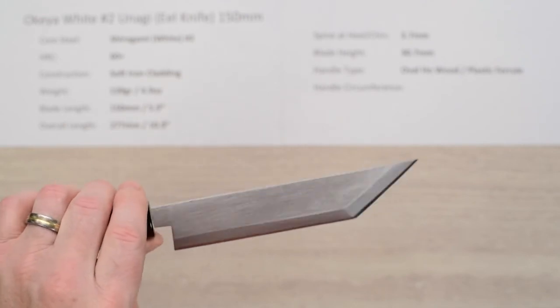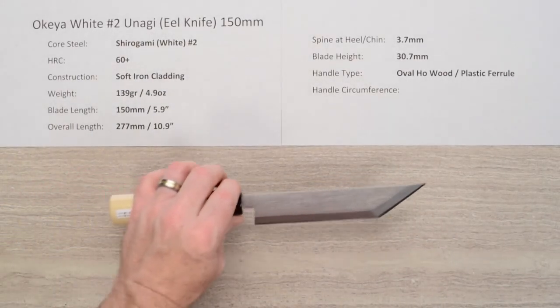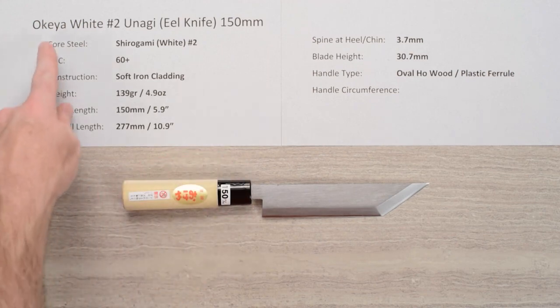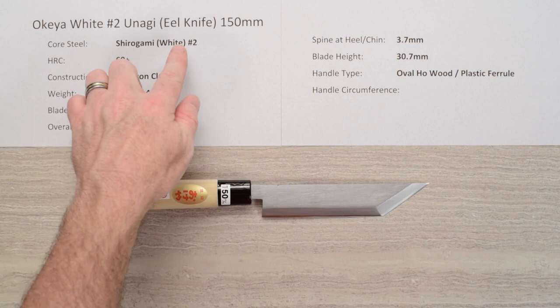So there you have a very workhorse offering if you're doing that sort of work. This is the Okeya Shirogami No. 2 Unagi Eel Knife, 150mm. Thank you.